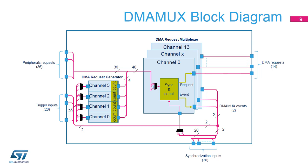The DMA MUX has two main sub-blocks: the request multiplexer and the request generator. The DMA MUX request multiplexer enables routing a DMA request from the peripherals to the DMA controllers. The routing function is ensured by the programmable multi-channel DMA request multiplexer. Each channel selects a unique DMA request unconditionally or synchronously with events from its DMA MUX synchronization inputs. The DMA MUX may also be used as a DMA request generator from programmable events on its input trigger signals.